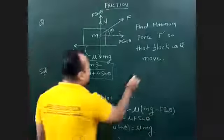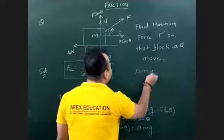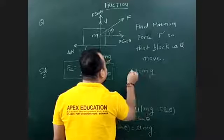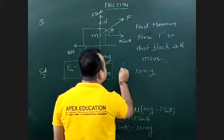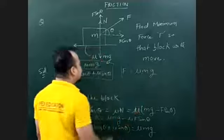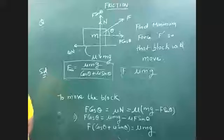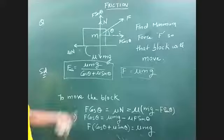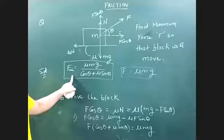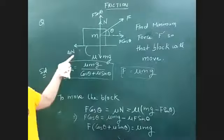This value compared to F equals mu mg — the direct horizontal force — is this value less? Yes, the angled force is less than mu mg. So applying force at a particular angle requires less force to move the block.